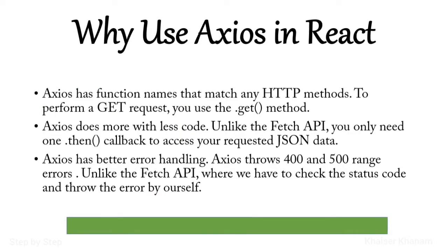Here we are looking at why we have to use axios in React. In our previous video, while fetching API data, we first had to convert to an object and then access that data. But in axios we have the then method and the catch method. The then method returns the response if our promise is fulfilled, and catch handles errors. Axios is very helpful in handling errors — it throws 400 and 500 range errors automatically, unlike fetch API where we have to check the status and throw errors ourselves.